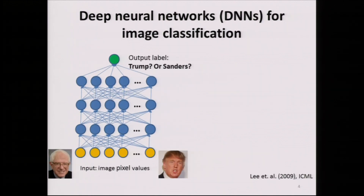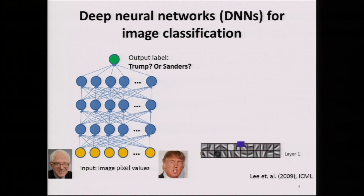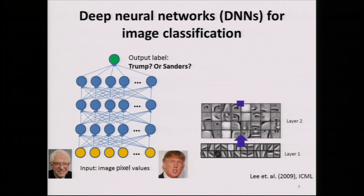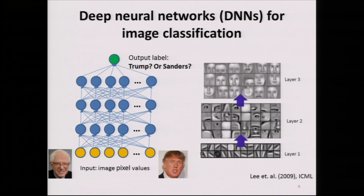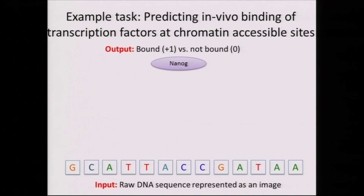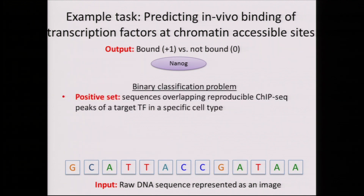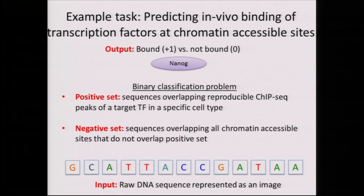Deep learning is traditionally used in image classification — this is where it is by far the state of the art. The first layer of neurons may pick out very simple patterns such as edges or brightness, the second layer may start to combine them, and the third layer will combine basic features to pick out broader shapes such as faces. These are the models we have adapted for genomics. For example, the positive set might be reproducible transcription factor ChIP-seq binding sites, the negative set being accessible regions in the same cell type that don't overlap the positive set, and the input is DNA sequence represented as an image.